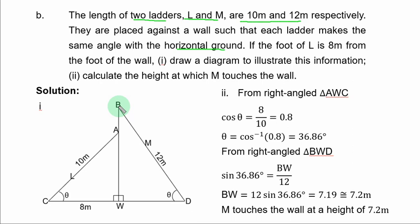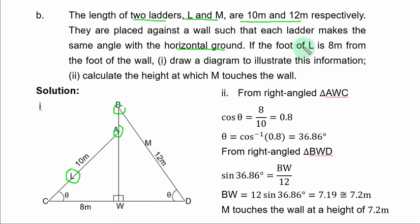The wall is vertical. Ladder L (10 m) is placed against the wall with its foot 8 m from the wall. The ladders make the same angle with the horizontal, but end at different heights due to different lengths. From triangle AWC: cos θ = adjacent/hypotenuse = 8/10 = 0.8. So θ = cos⁻¹(0.8) = 36.84 degrees. This same angle applies to ladder M.